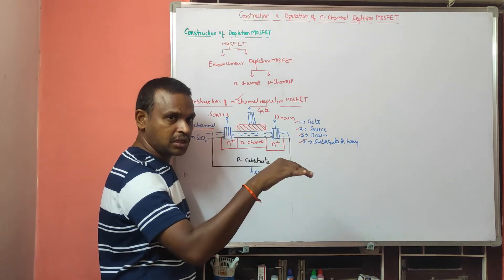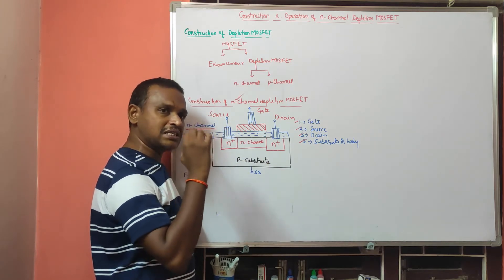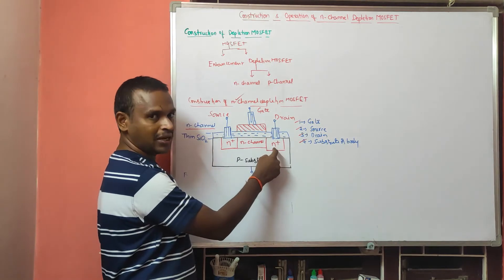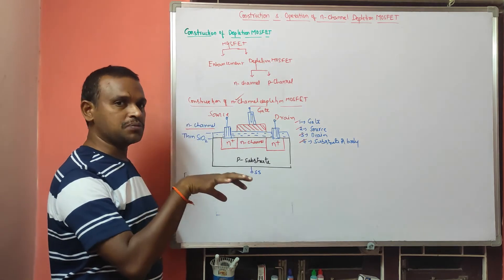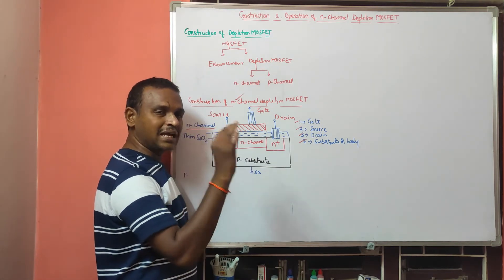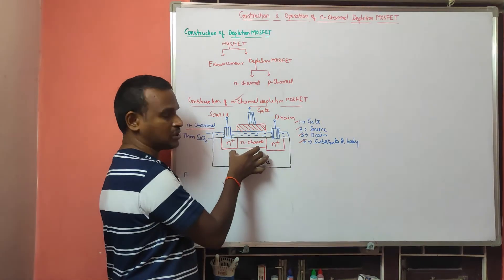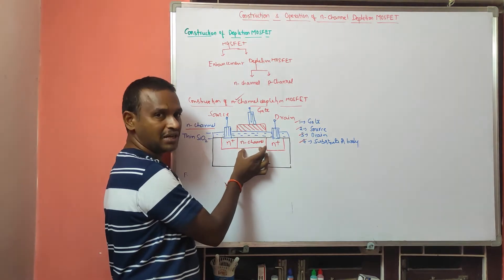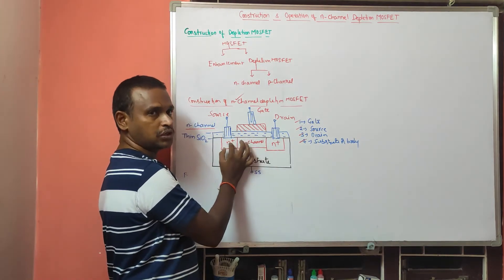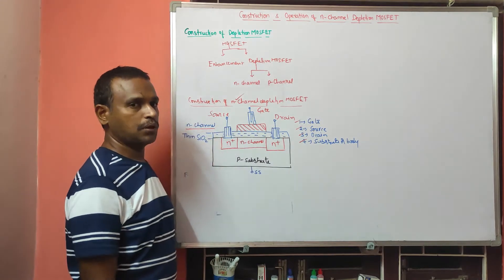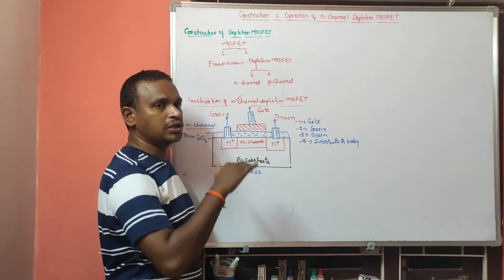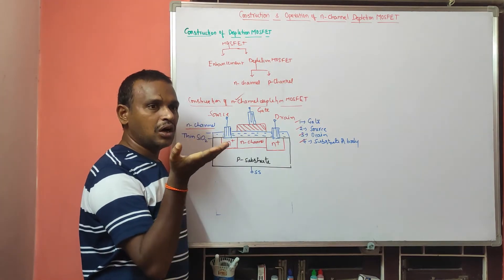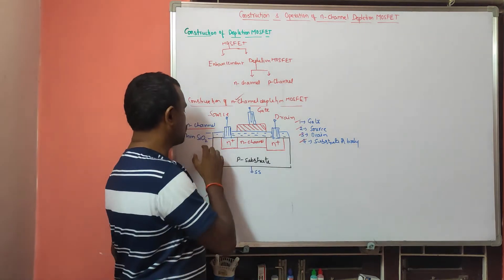So what we have to consider for source and drain: for N channel, the source and drain are both N type materials — N diffusion is done. N+ material and N+ material are formed, these two are considered as source and drain. The key difference between enhancement and depletion MOSFET is that in enhancement there is no channel between source and drain, but in depletion MOSFET we form the N channel between source and drain.